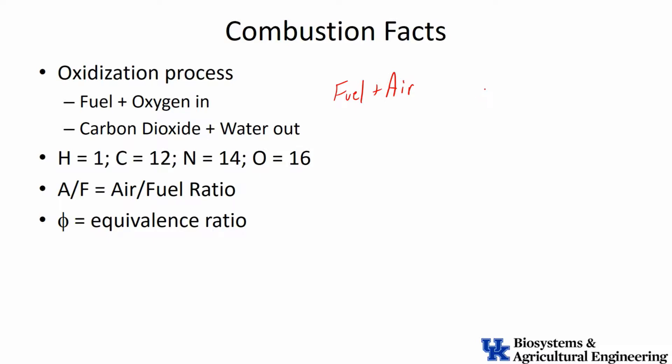Air is mostly nitrogen and oxygen. The ratio of nitrogen to oxygen is about 3.76 molecules of N2 for every oxygen molecule — that's the relative concentration of oxygen and nitrogen. The other gases in air — carbon dioxide, carbon monoxide, everything else — are just a fraction of a percent, so in most analyses we ignore those. If combustion works out perfectly, we get carbon dioxide and water out as products, but we know we're going to get some NOx and other things, which we'll discuss.